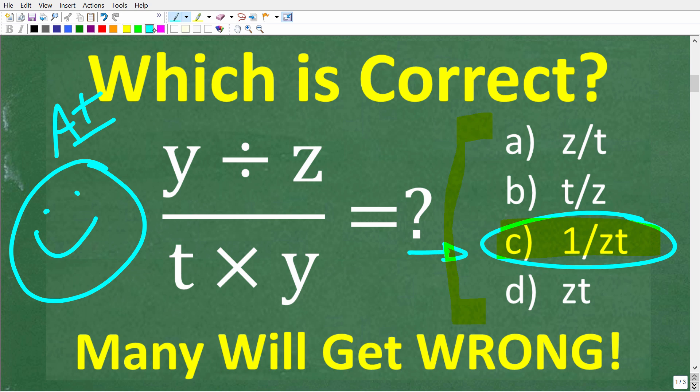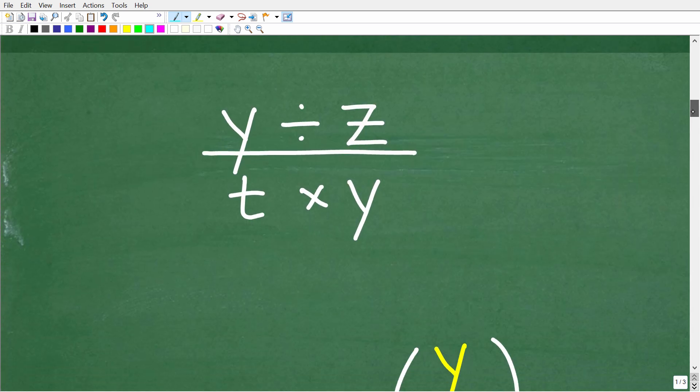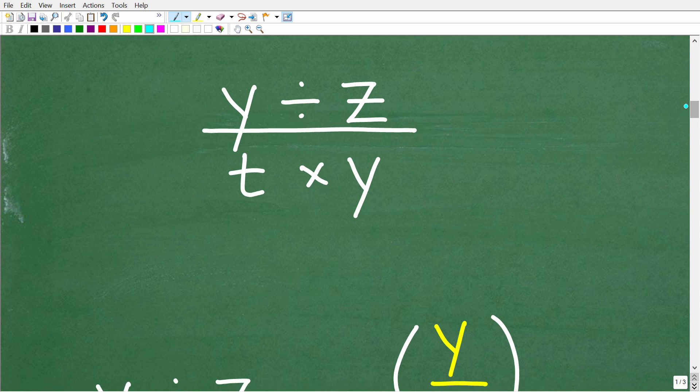But let's make sure you actually understand the algebra. Alright, so once again, we have y divided by z all over t times y. Now, the first thing that we want to do is kind of rewrite the problem. So here is our problem.